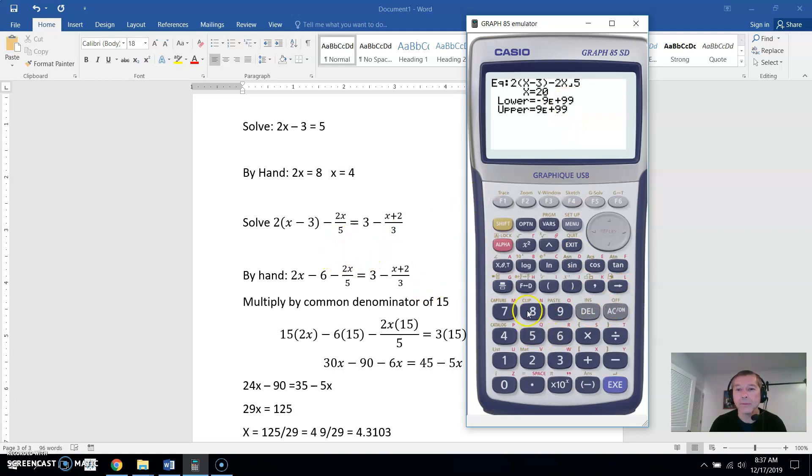5, and then equals, shift, decimal point, equals 3, minus, now here we'll have to put parentheses, so it knows the whole X plus 2 is up in the numerator. So parentheses, X plus 2, close parentheses.